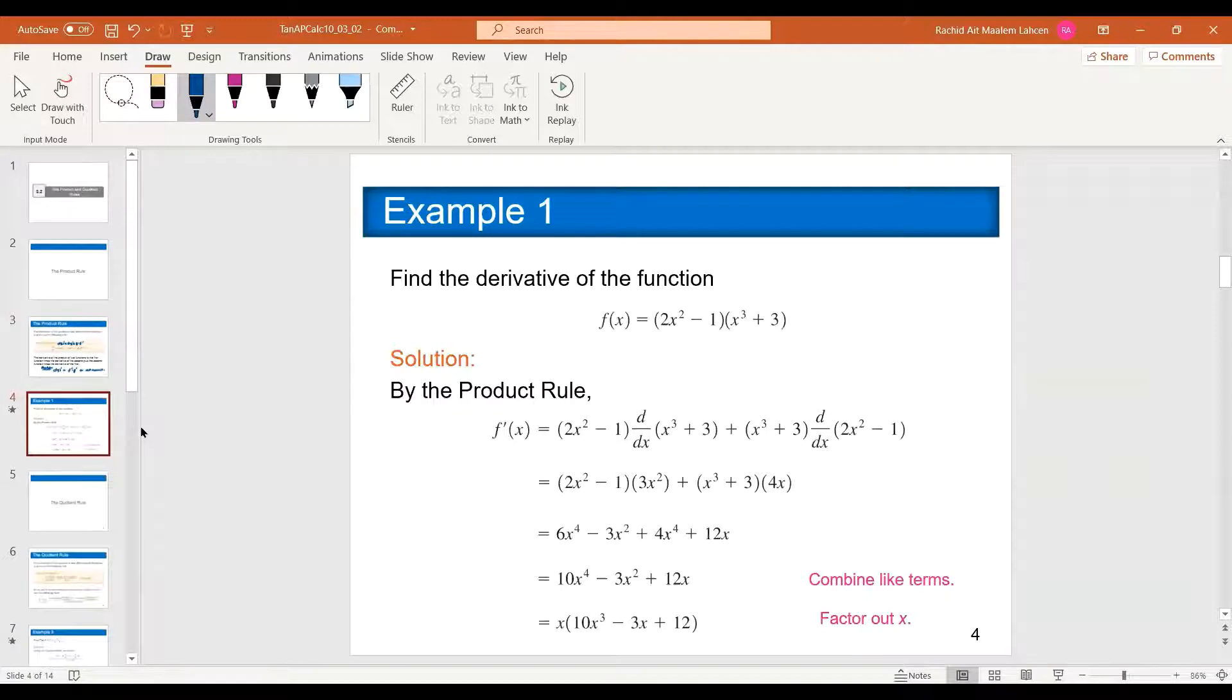For this example, you have two choices, you can foil and use the power rule, or you can keep as it is and use the product rule. So here we are going to use the product rule, which means this is f, for example, and this is g. Just so you match it with the formula and you see what's going on. So it's f, g prime, g, f prime.